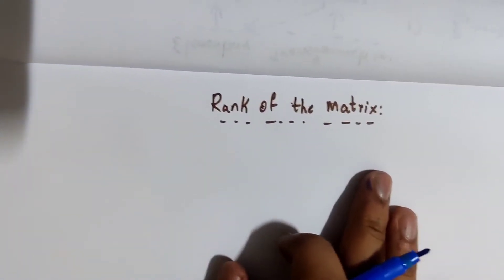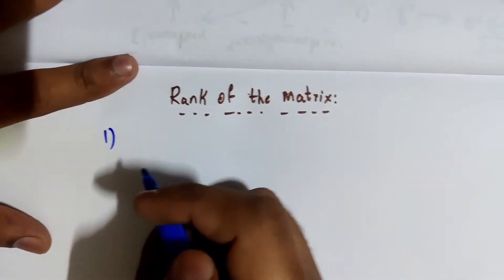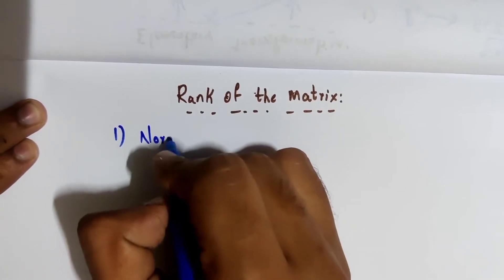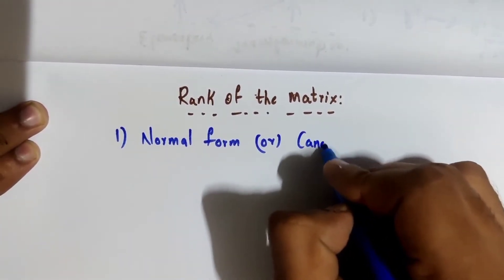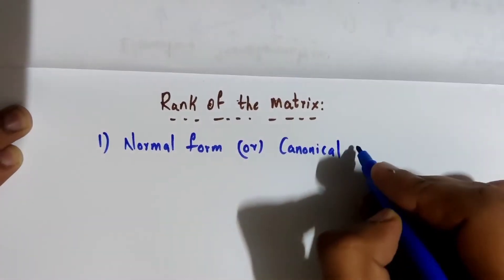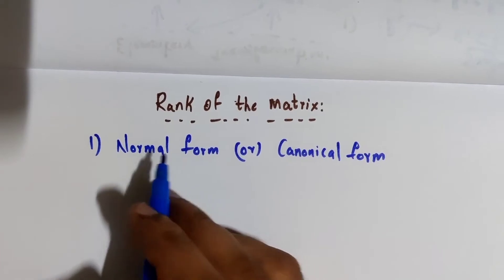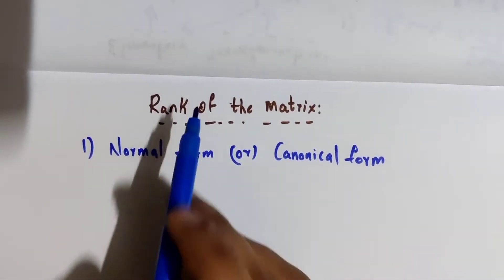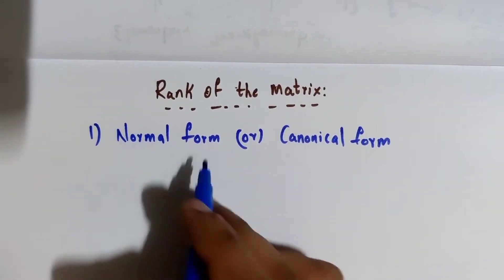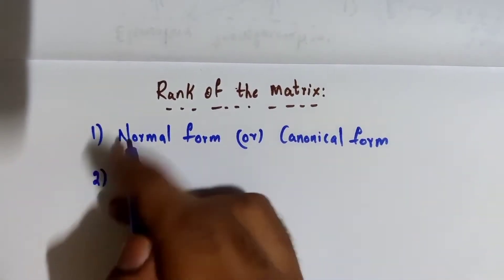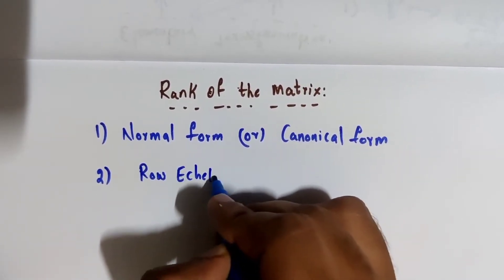When it comes to rank of the matrix, we have two ways of finding the rank. The first way is using normal form — whatever is in your syllabus, only those ways will be discussed. The extra ones are not necessary. The aim is to find the rank, and you can use any method. I will also tell you a very simple shortcut method which you can use to verify. Shortcuts are only used for verifying when it comes to exams. The first method is normal form or canonical form, and the second one is row echelon form.